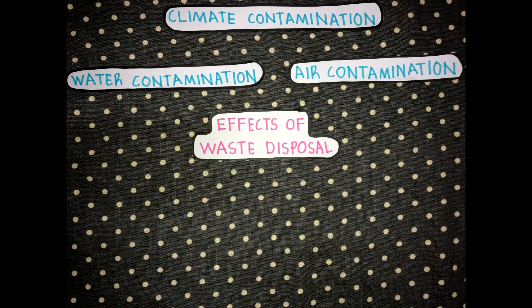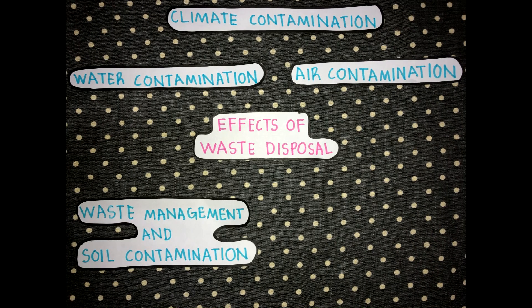Third, climate contamination. Other than temperature, the level of precipitation in the air can also be drastically affected, from acid rain to severe hailstorms or global warming. The next effect is soil contamination. This results when hazardous substances are spilled or buried in the soil. Plants in contaminated soil will absorb the hazardous substances, and humans or animals that ingest these plants may get sick.